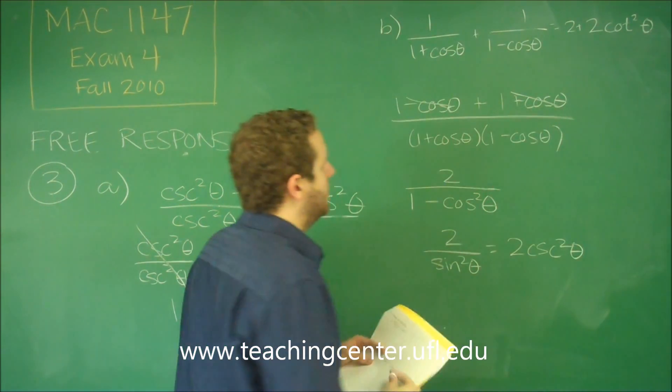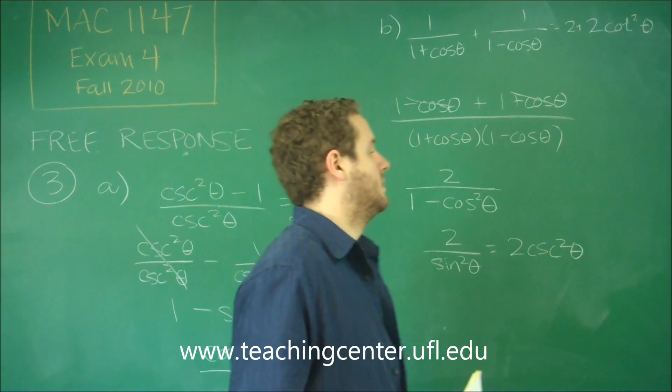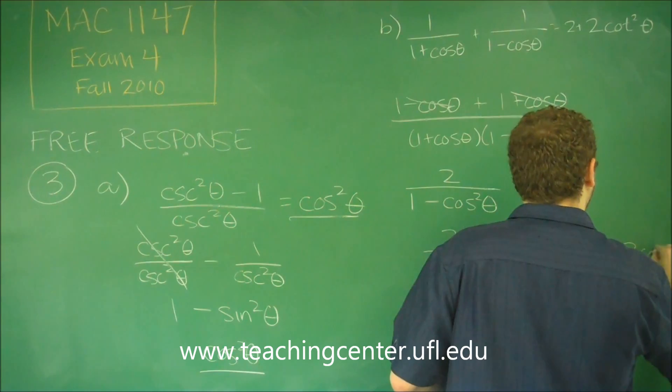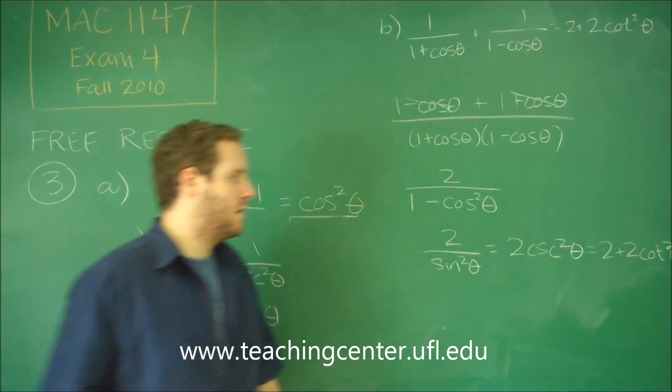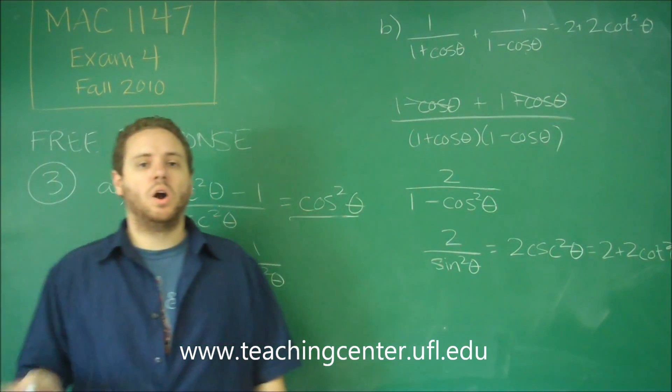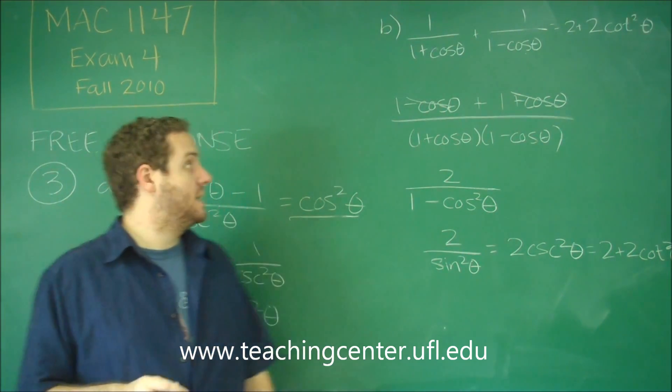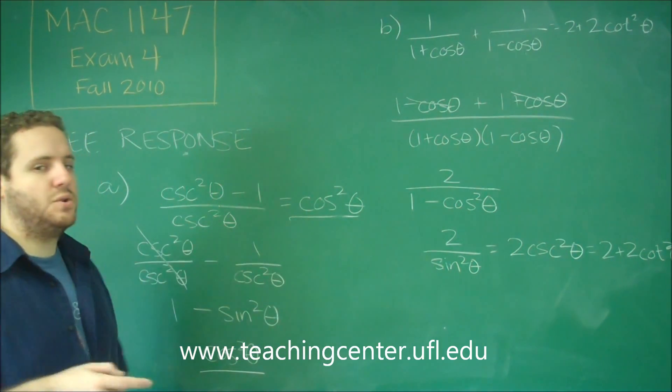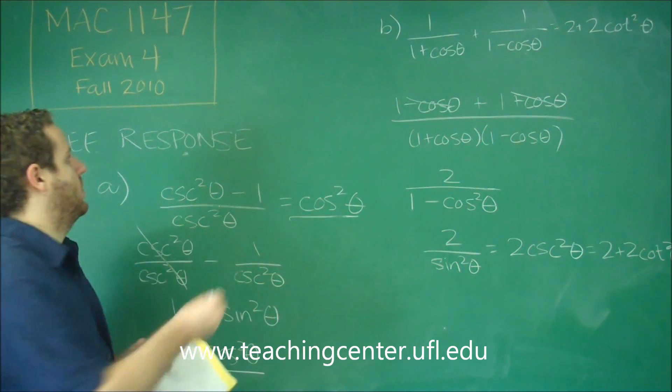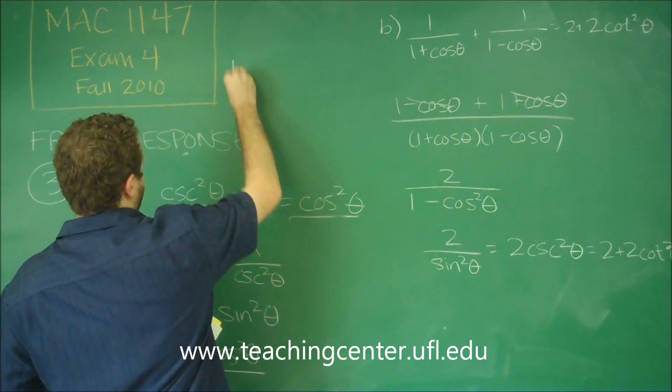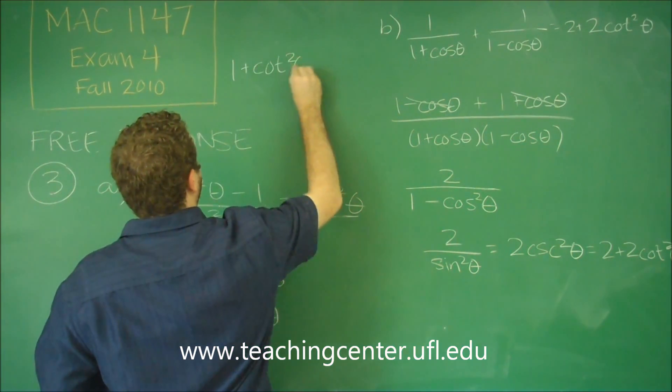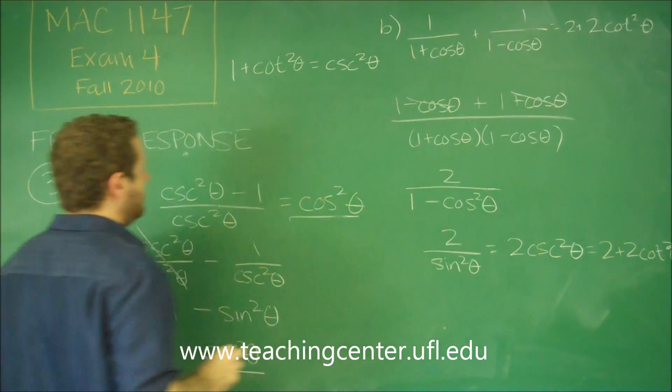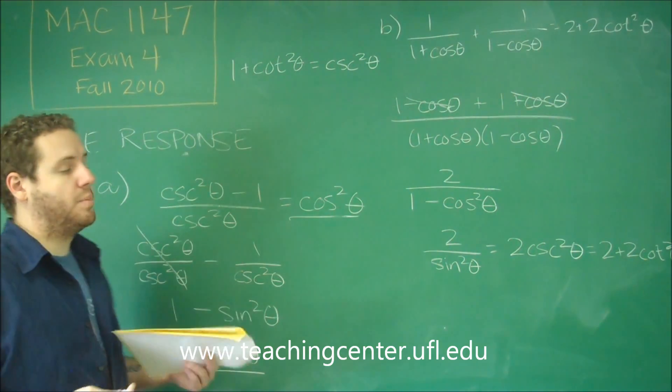Well, this comes into our other forms of the Pythagorean identity. Not only do you have that sine squared plus cosine squared equals one, but you can think of it as if you divide everything by sine squared, you have this other identity that comes out, which is one plus cotangent squared theta equals cosecant squared theta. That's one of our other Pythagorean identities.